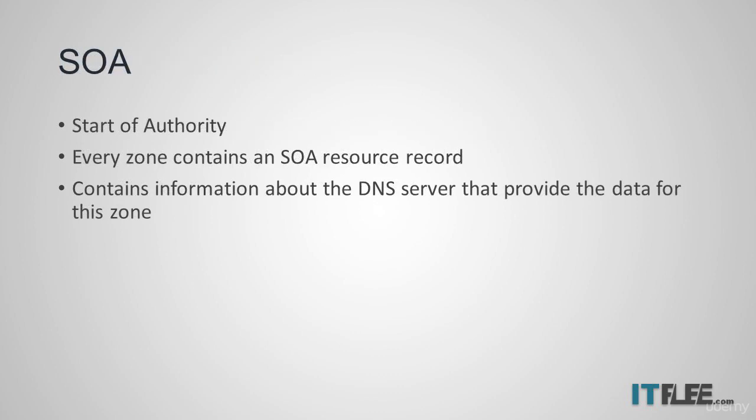The first type is an SOA, or Start of Authority, resource record. Every zone contains an SOA resource record at the beginning of the zone. The SOA resource record contains information about the DNS server that has provided the data for that particular zone.